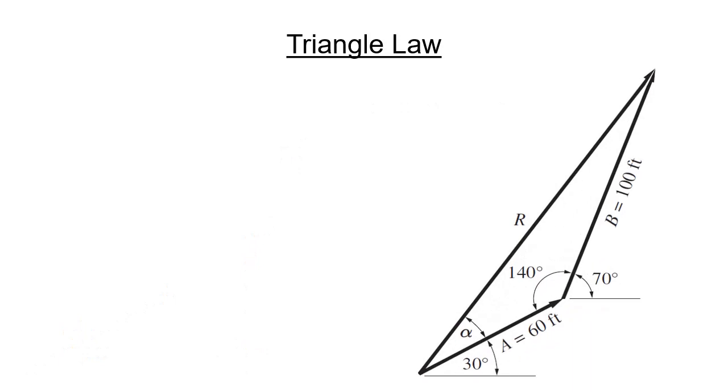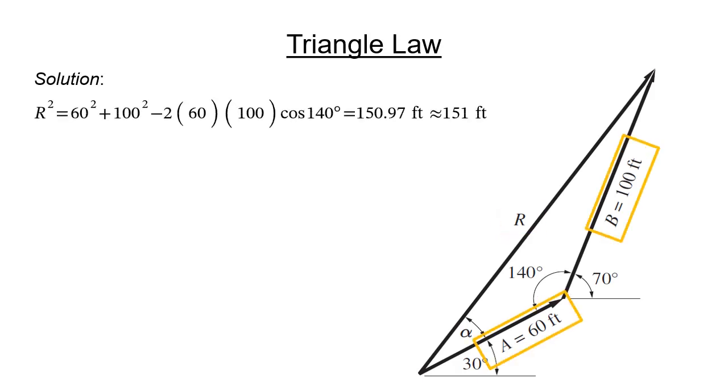We can determine the magnitude of the resultant R by using the law of cosines. The square of R is equal to the sum of the square of the other two sides, 60 feet and 100 feet, minus twice the product of the other two sides and cosine the angle between them. The magnitude of the resultant R is 151 feet.